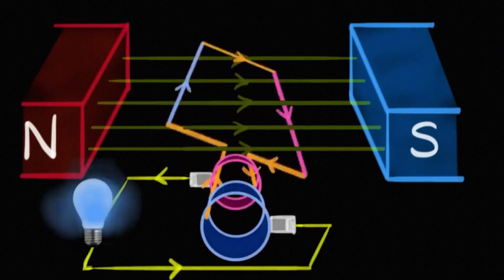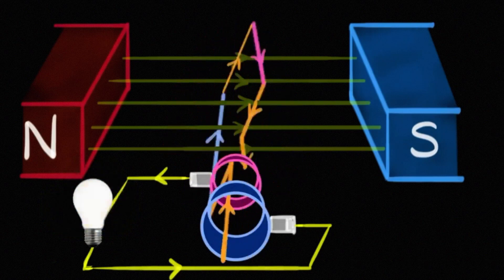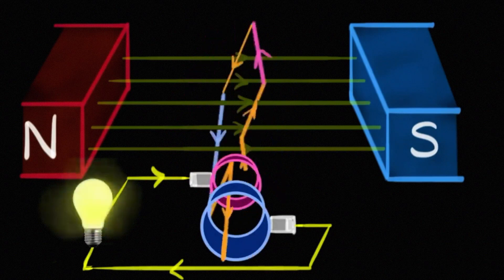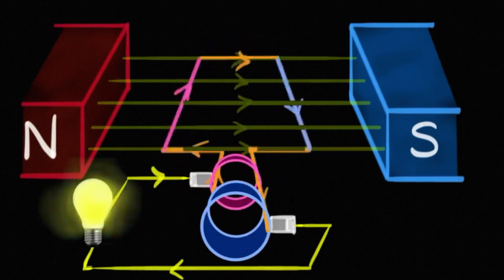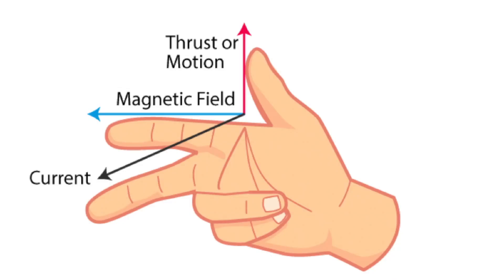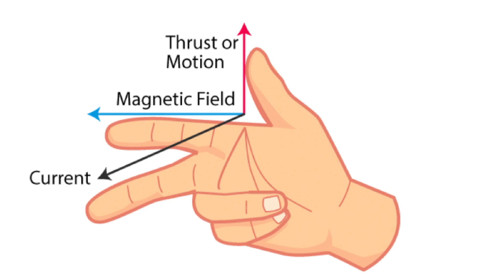When electric current is produced, we need to determine its direction. We use Fleming's right hand rule — remember, in DC motor we used Fleming's left hand rule, but here we use Fleming's right hand rule. We stretch the thumb, forefinger and second finger at right angles to each other, such that the forefinger indicates the direction of the magnetic field, the thumb shows the direction of motion of the conductor, and the second finger indicates the direction of the induced current.